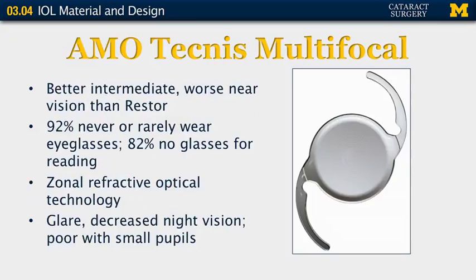The AMO Tecnis Multifocal is a direct competitor, also showing rings of power on the lens. It is somewhat better for intermediate distance but not quite as good at near as the Restore lens. 92% of patients reported never or rarely needing to wear glasses for different activities. The technology relies on zonal refractive optical technology. Patients experience glare and decreased night vision with this lens, and it tends not to function as well with smaller pupils.